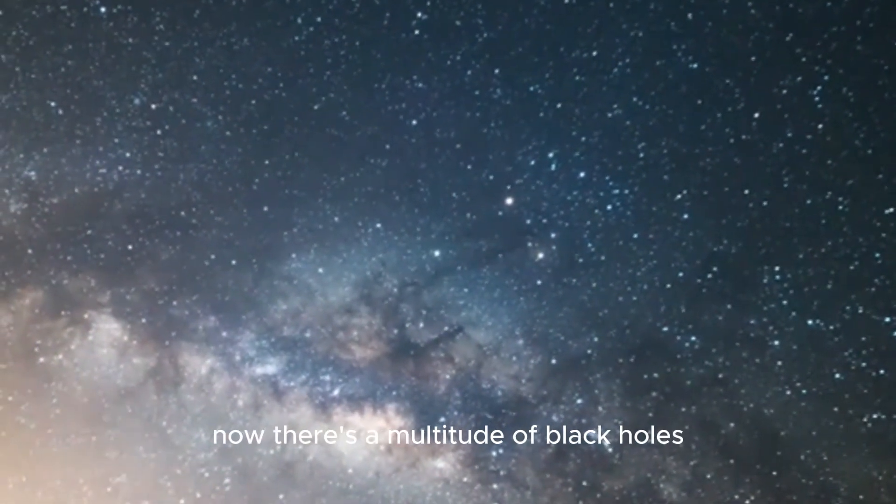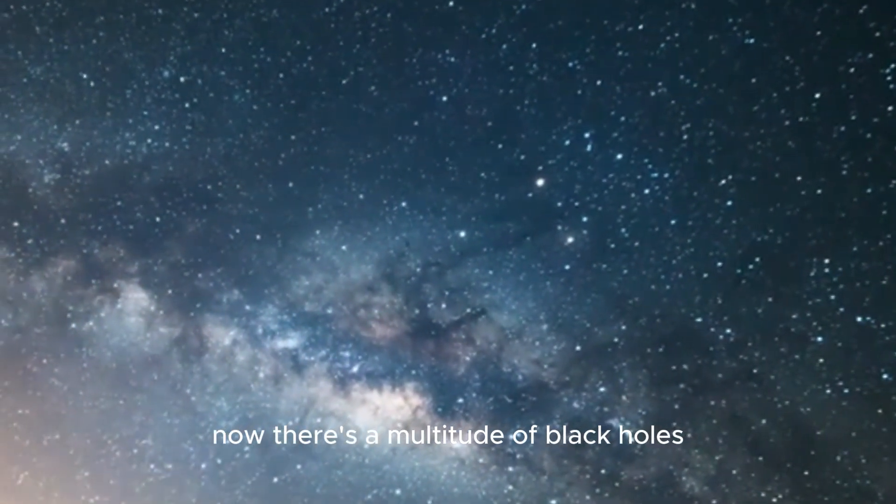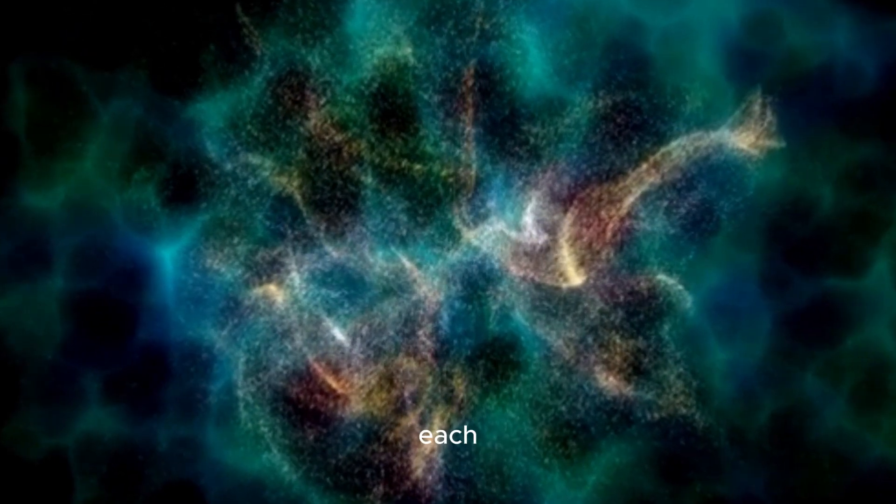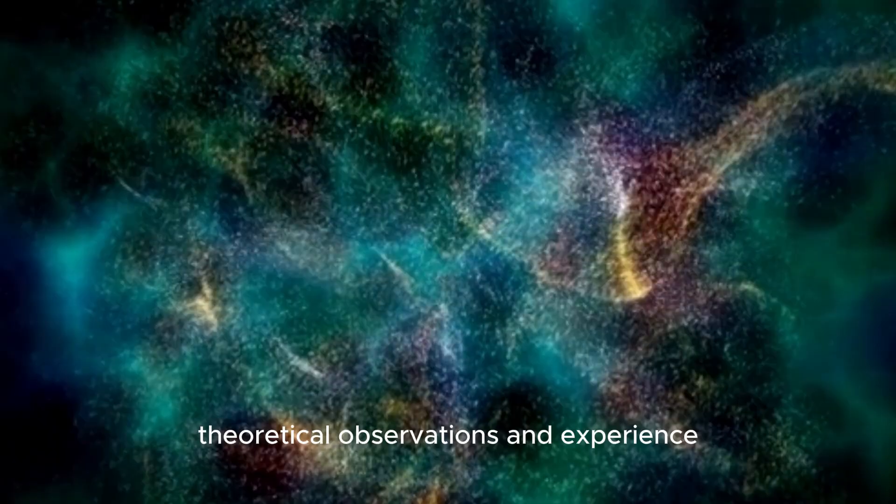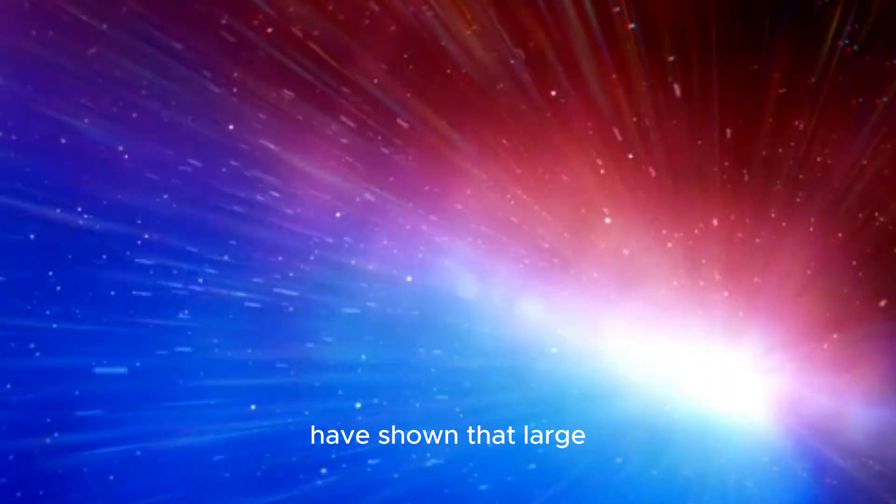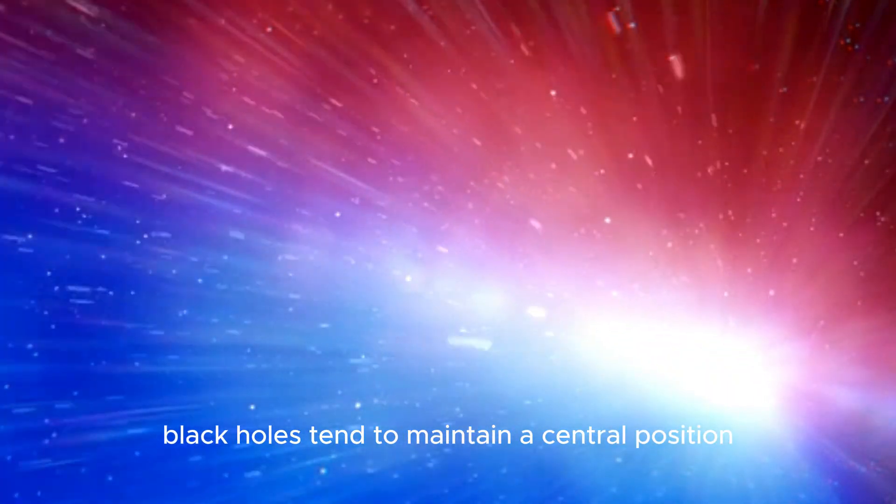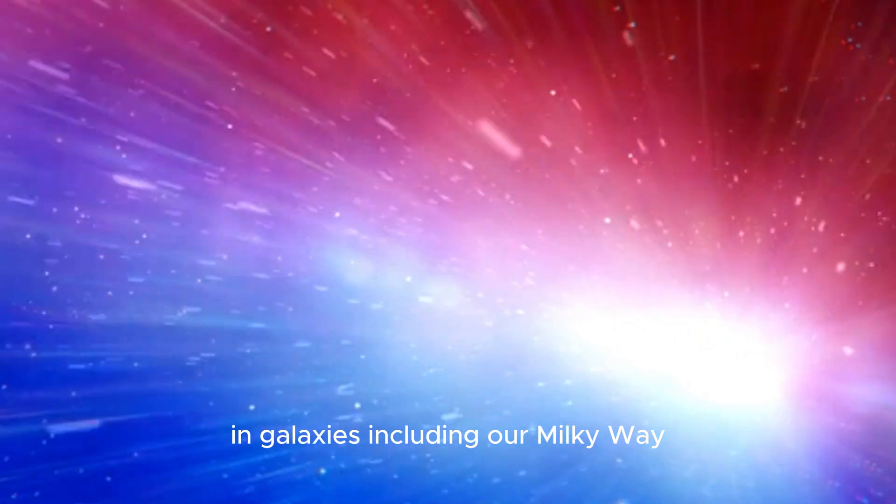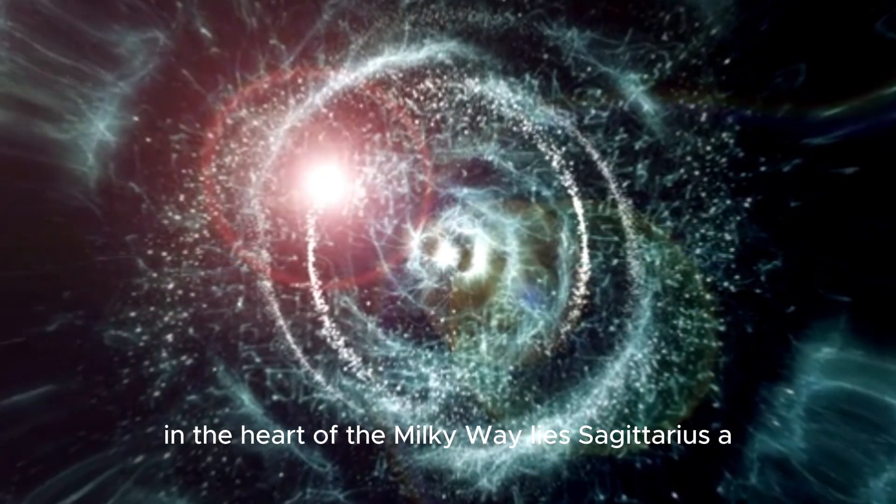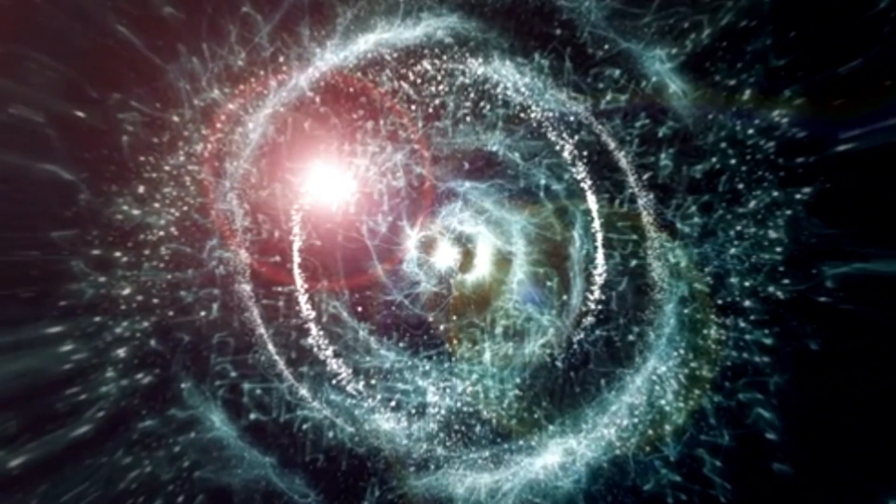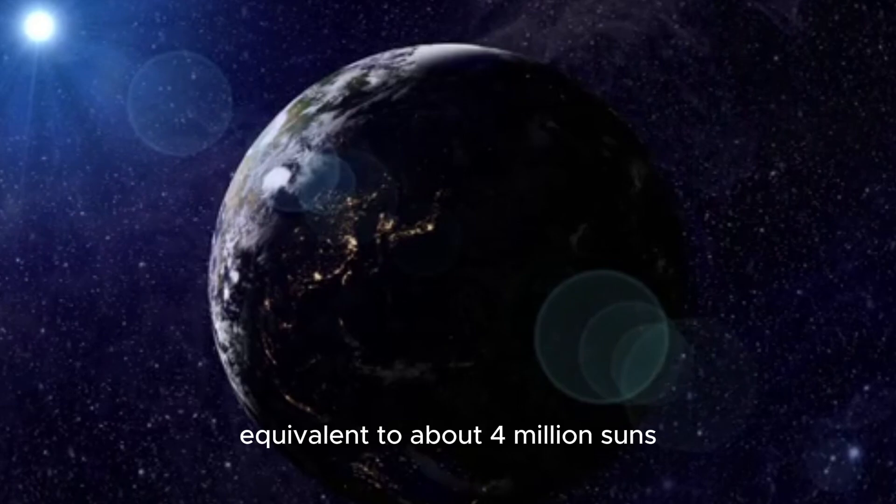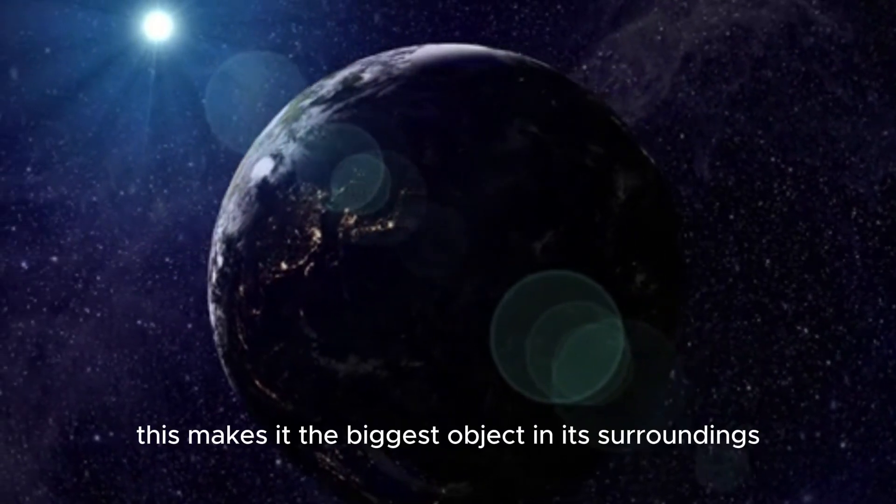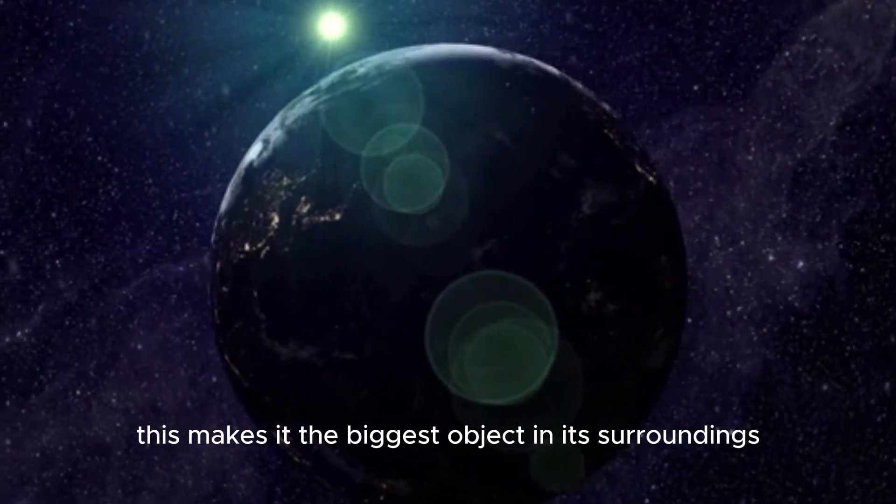Looking over the Milky Way now, there's a multitude of black holes spread across the universe, each having a mass equivalent to millions of solar masses. Theoretical observations and experience have shown that large black holes tend to maintain a central position in galaxies, including our Milky Way. In the heart of the Milky Way lies Sagittarius A*, a supermassive black hole with a mind-boggling mass equivalent to about 4 million suns. This makes it the biggest object in its surroundings.